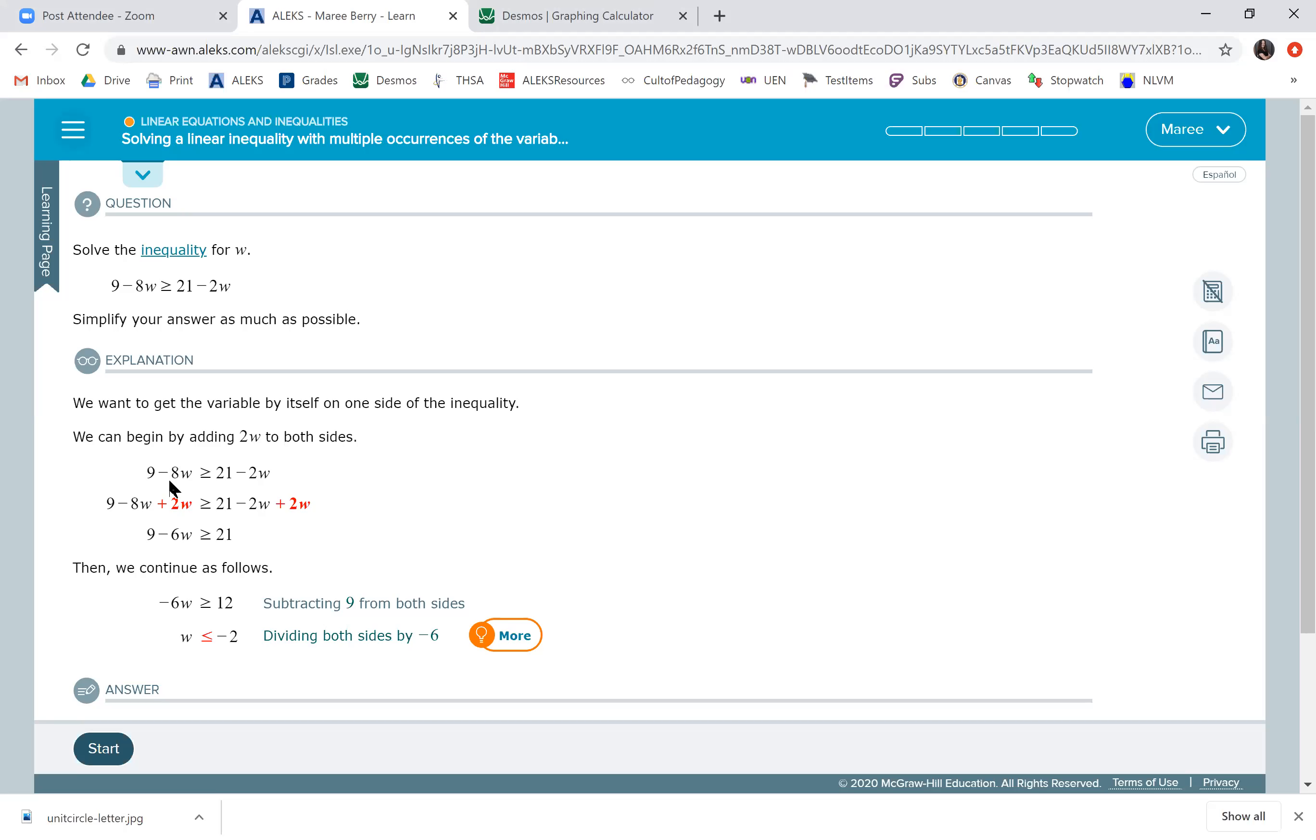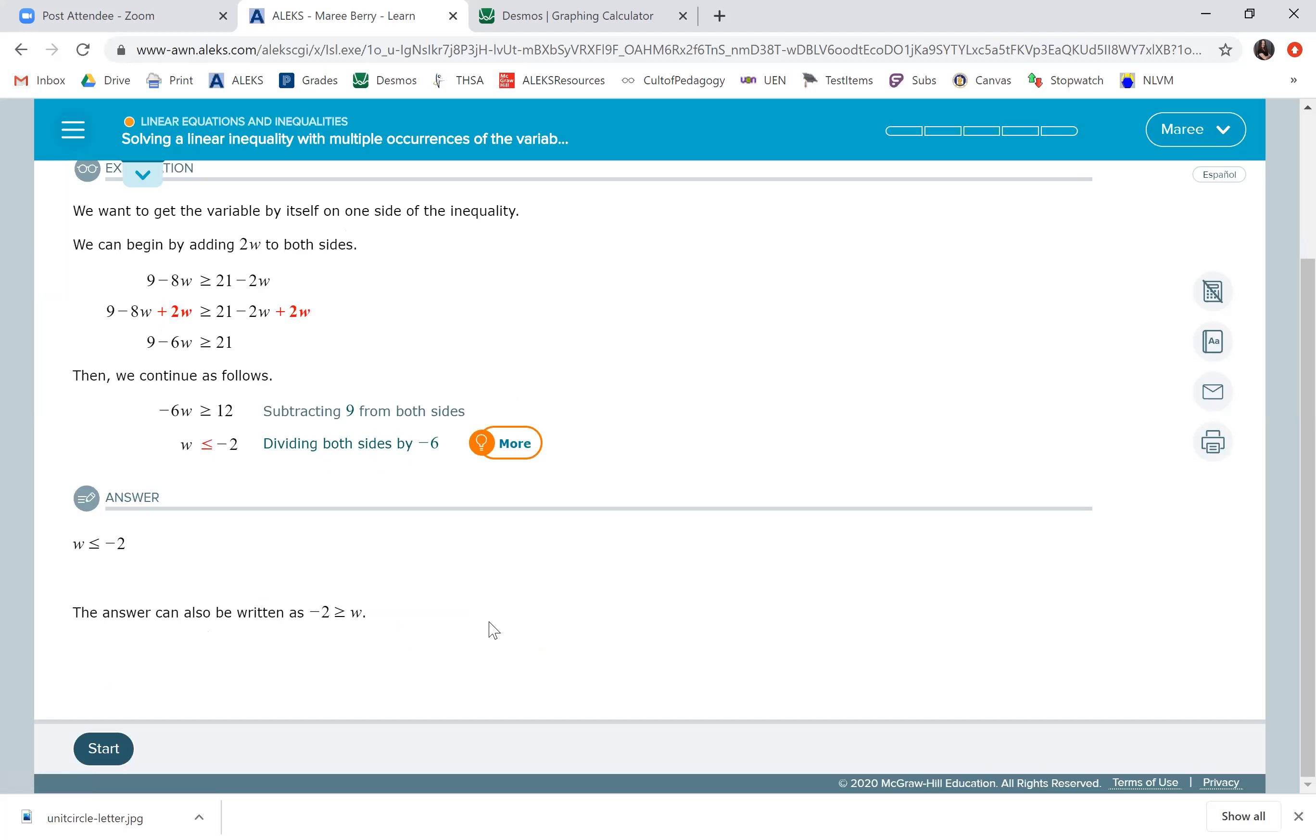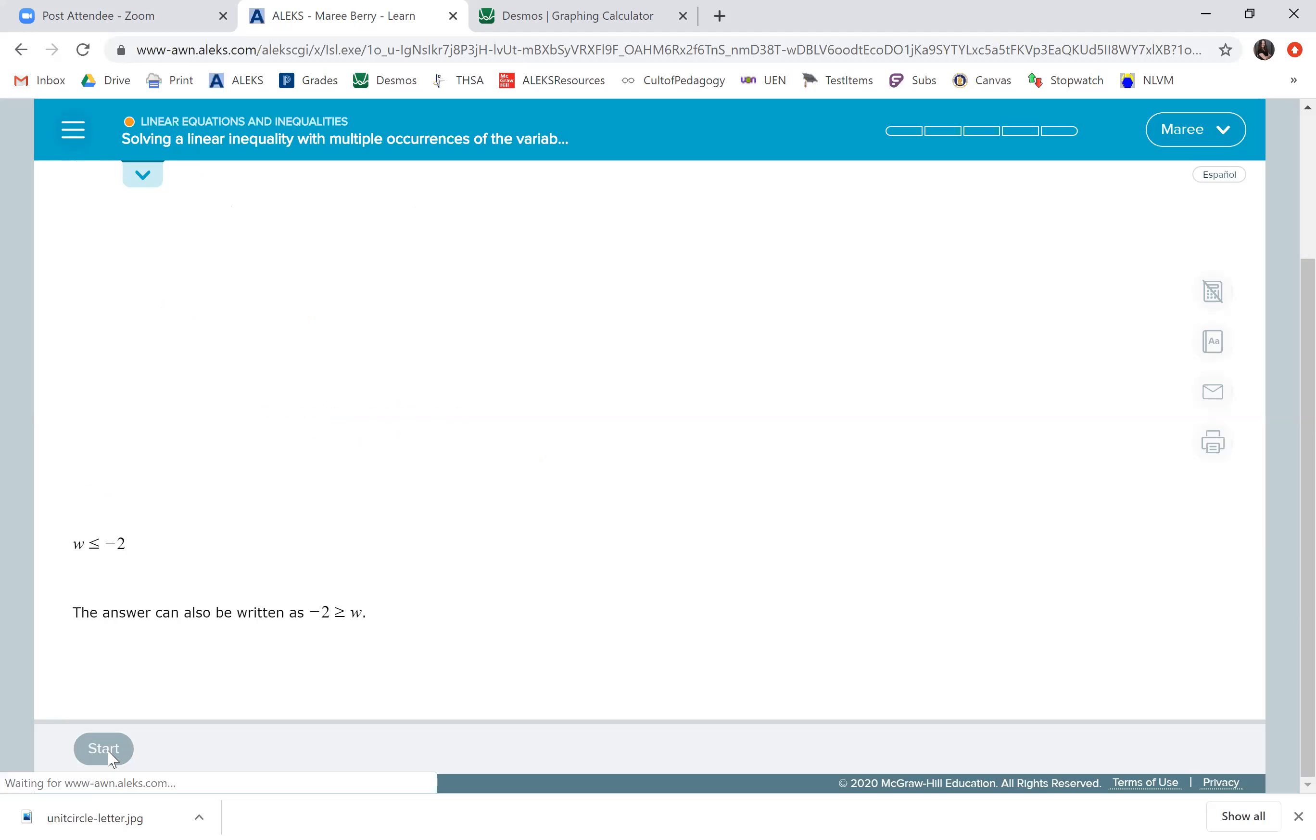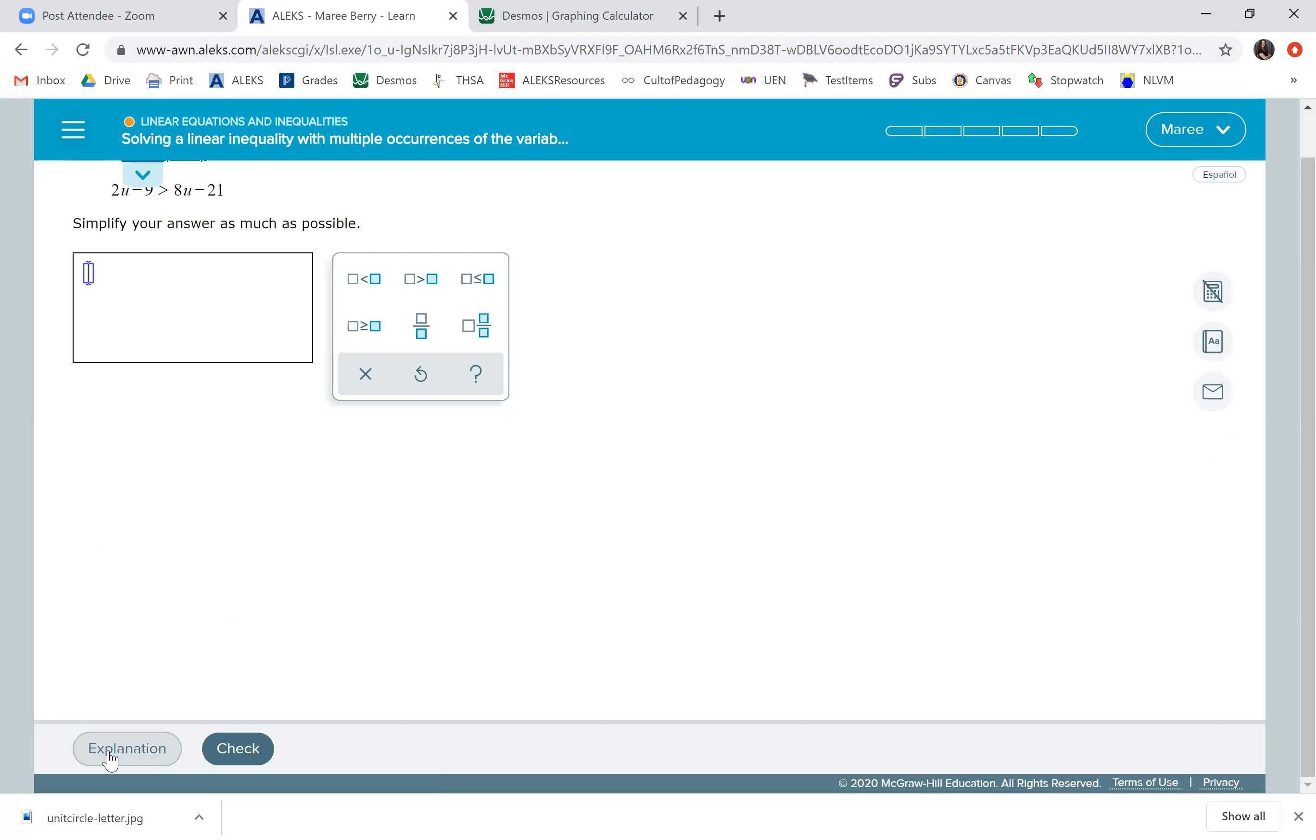I may have started by adding 8W to both sides. That way my W would be positive right at the end and I wouldn't have to be dividing by a negative. So to solve this one, we have 2U minus 9 is greater than 8U minus 21.